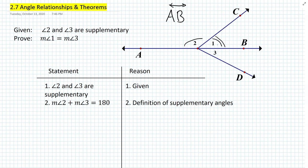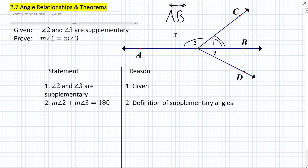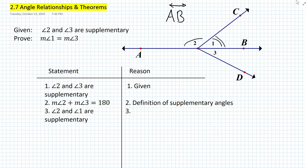Well, the first thing we can say is that they're supplementary, and therefore they add up to 180 degrees. We need to state that these two angles are supplementary. In the given, we were told that angles 2 and 3 are supplementary. However, for angles 1 and 2, we're not told that they're supplementary, so we have to state it. For step 3, as a statement, we say that angle 2 and angle 1 are supplementary.